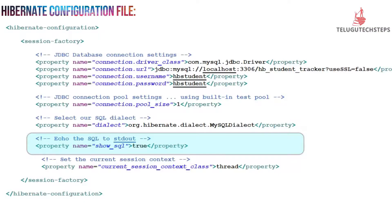The next tag is echo the SQL to stdio. It is just to know what is actually happening in the background. It is very helpful while you are developing or testing. If you want to show the SQL being executed in the background by Hibernate, you can enable the show_sql property and it will help you.